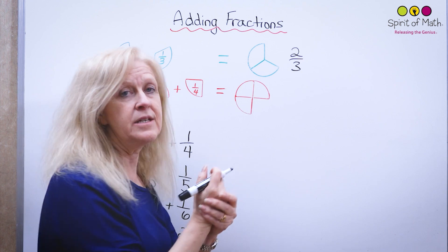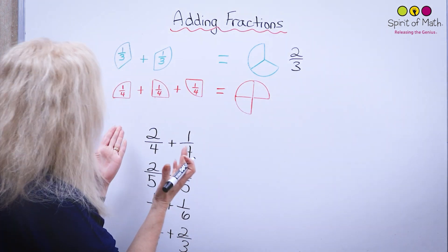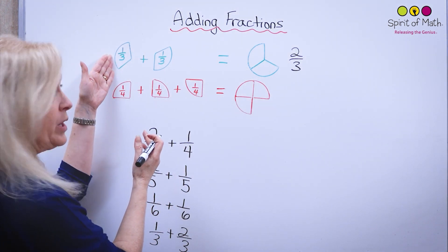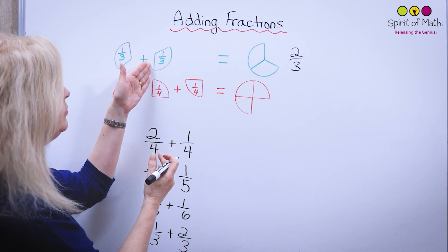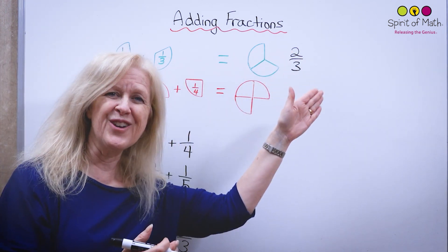There's two pieces and they're thirds. So really what you've done is you've had one third and you have another third which makes a total of two thirds.